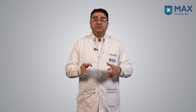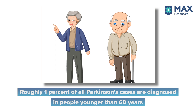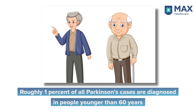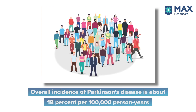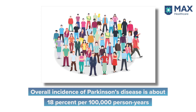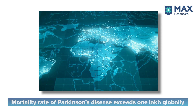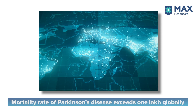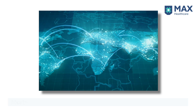The age of onset of Parkinson's is basically above 60 years. About 1% of people above the age of 60 years and 4% of people above the age of 80 years are affected, with an incidence of 18 persons per 1 lakh persons per year and a prevalence of more than 7 million people globally. Parkinson's is creating havoc, with a mortality rate of more than 1 lakh globally.